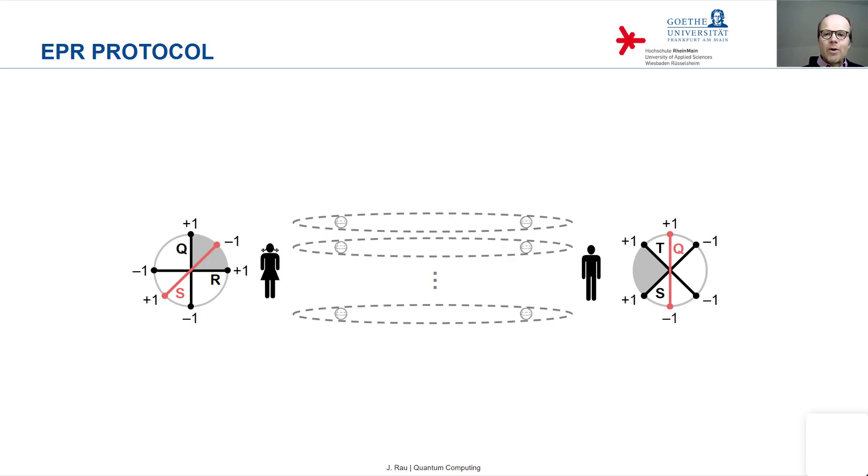Now, after they have performed all the measurements, Alice and Bob talk on the phone or over some other communication channel, and they share with each other which measurements they performed.